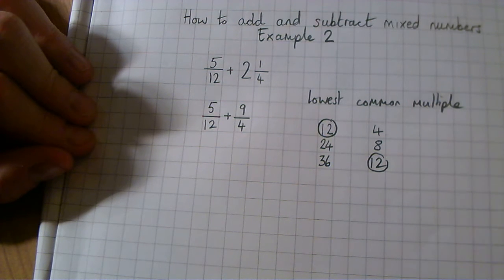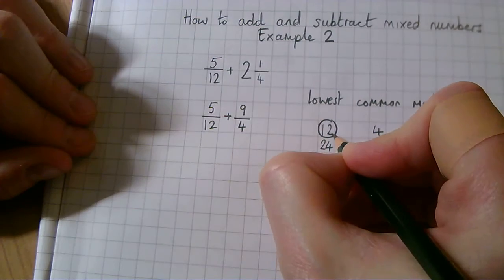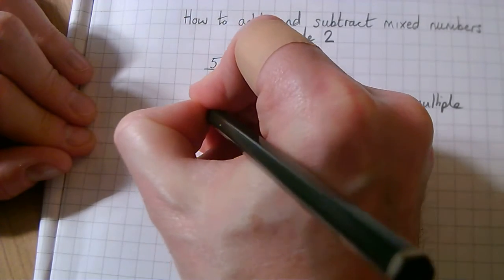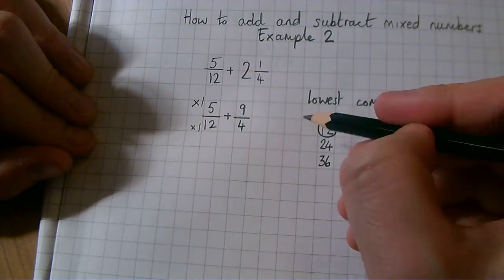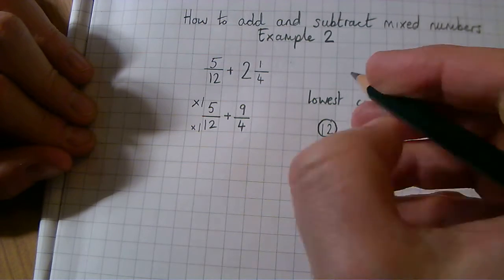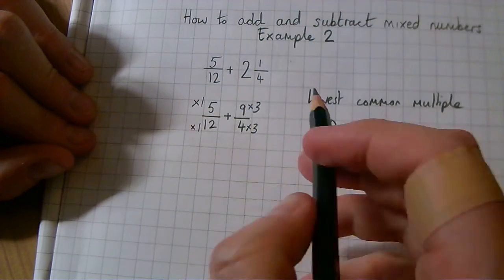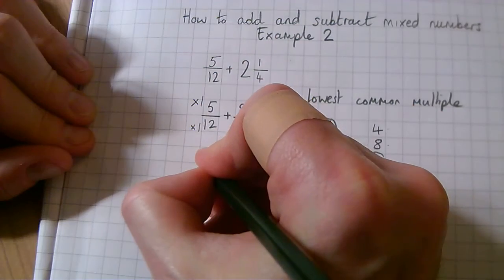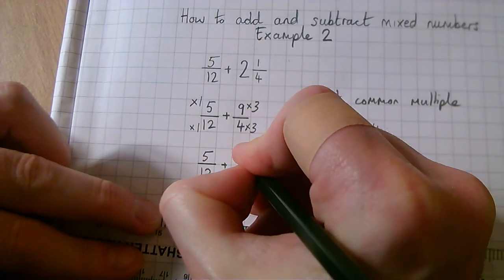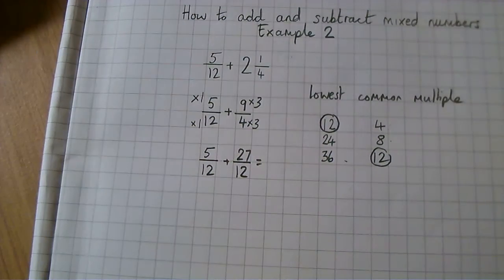Now we're going to use that to make the denominators the same. For the first fraction, 12 is the first multiple of 12, so we times that denominator by 1, and whatever we do to the denominator we must do to the numerator. For the 4 denominator, 12 is the 3rd multiple of 4, so we times that denominator by 3 and times the numerator by 3. Now we do these multiplications.